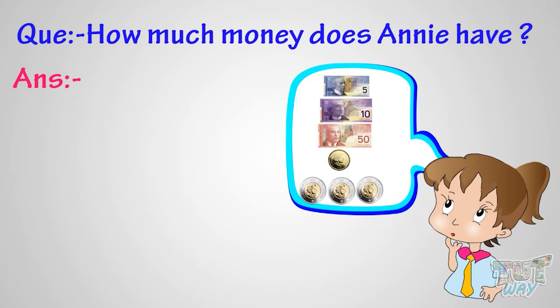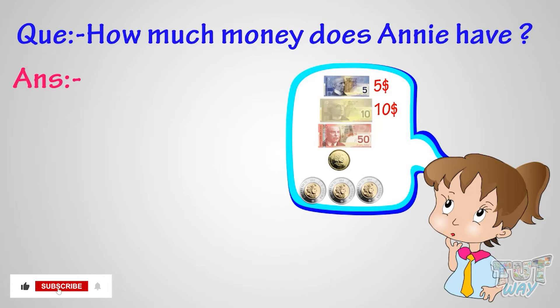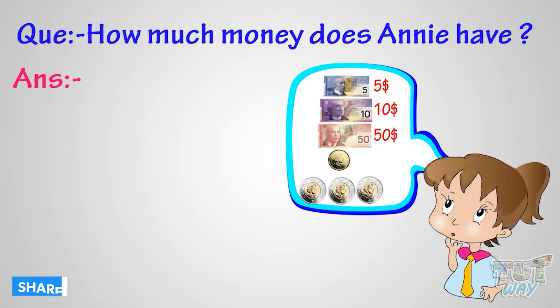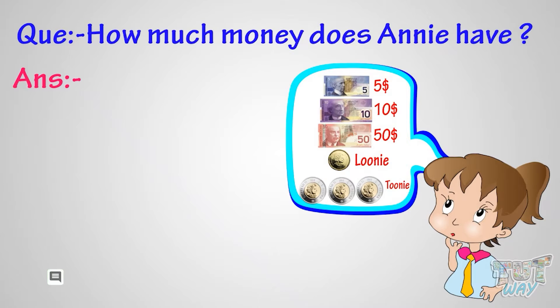Annie has a five dollar bill, a ten dollar bill, a fifty dollar bill, a loonie, and three toonies.